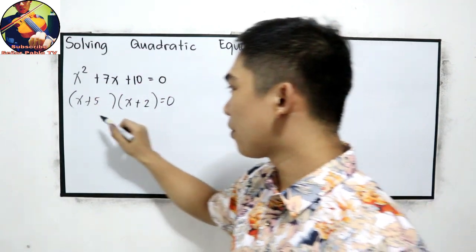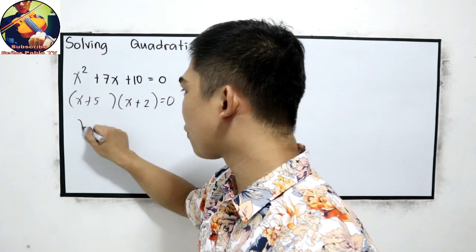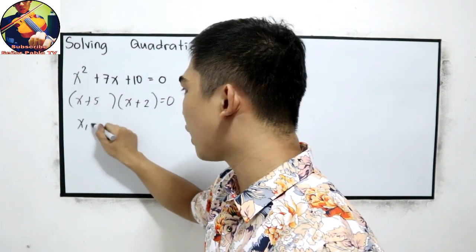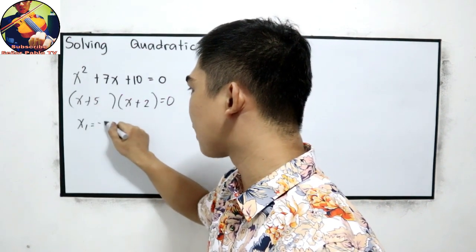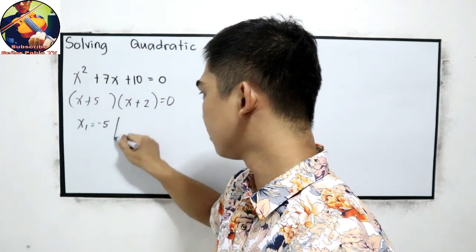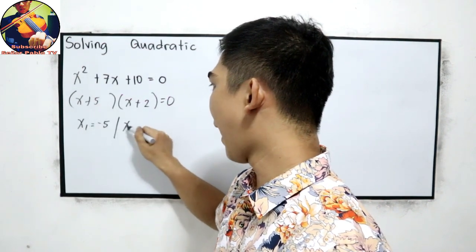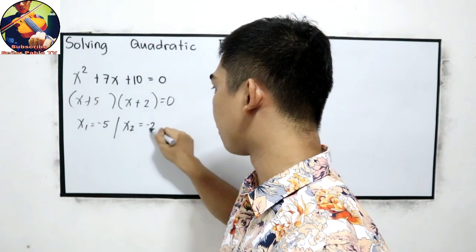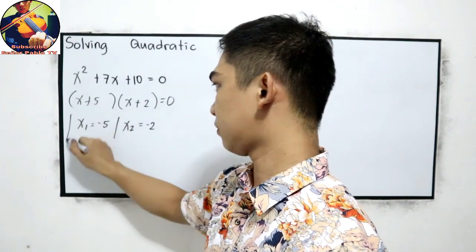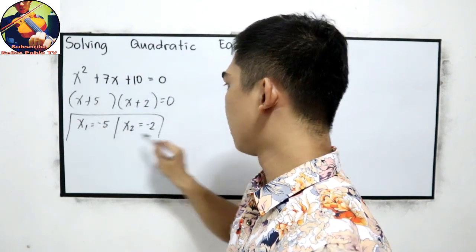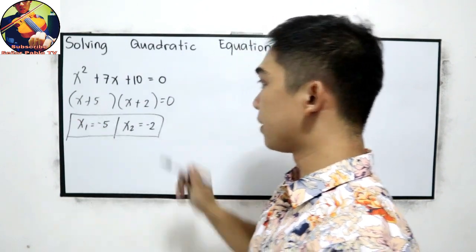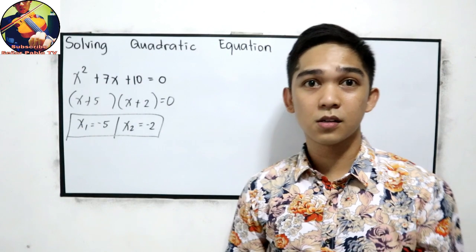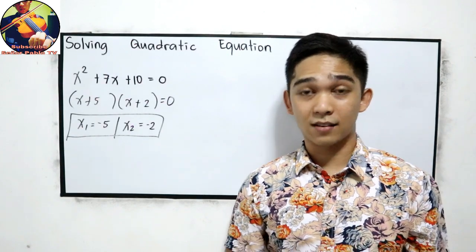So our values are x sub 1 equals negative 5, and x sub 2 equals negative 2. These are the values for x.